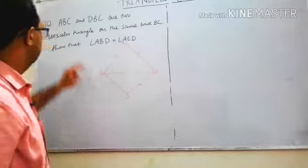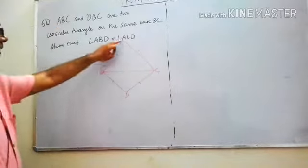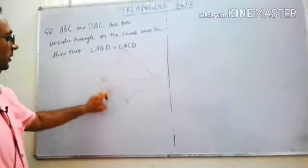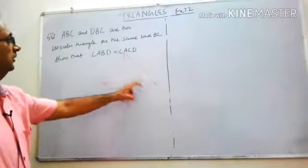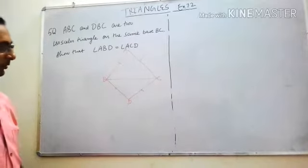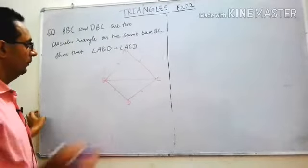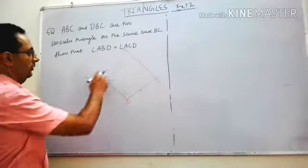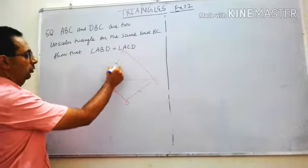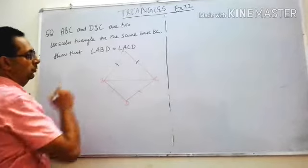Next question: ABC and DBC are two isosceles triangles on the same base BC. If triangle ABC is isosceles then AB and AC are equal; if DBC is isosceles then DB and DC are equal. We have to prove that angle ABD is equal to angle ACD.